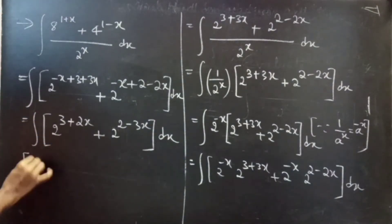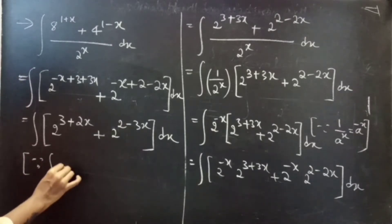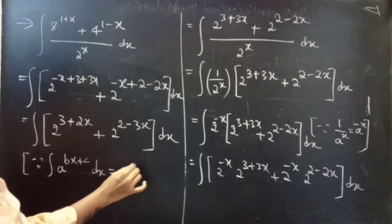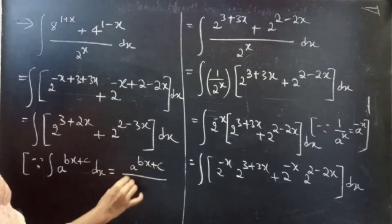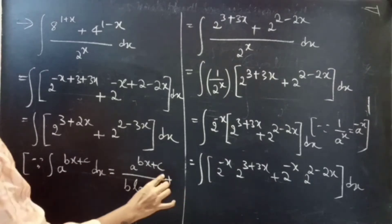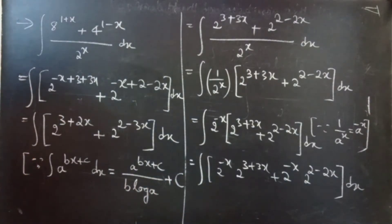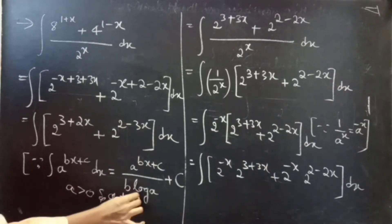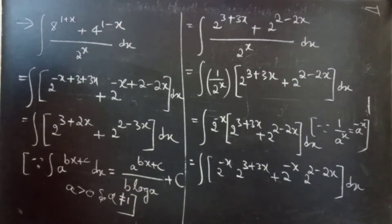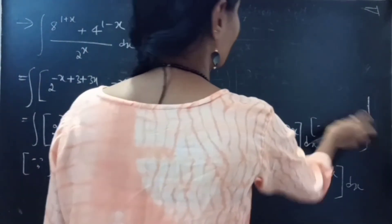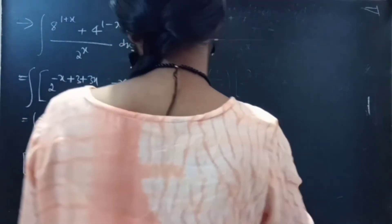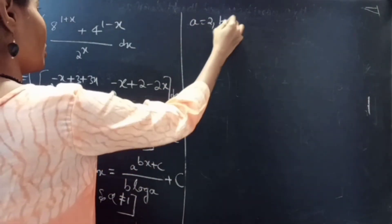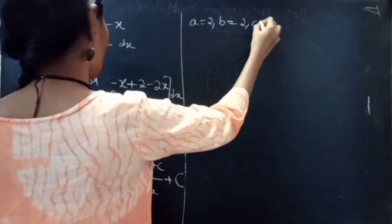Now we can use the formula: the integral of a^(bx+c) dx equals a^(bx+c) divided by b times log a, plus the constant of integration — valid for a greater than 0 and a not equal to 1. For the first term, a equals 2, b equals 2, and c equals 3.